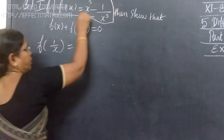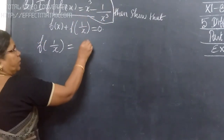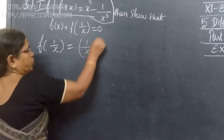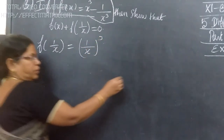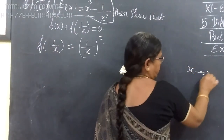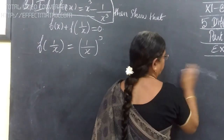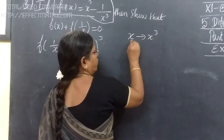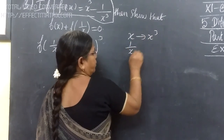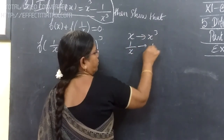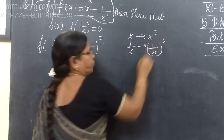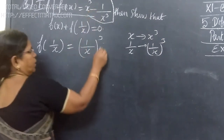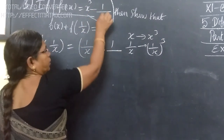So, 1 by x means you are writing 1 by x whole cube. x means x cube, and 1 by x means 1 by x whole cube. Then minus 1 by x cube.